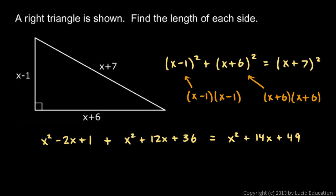Now we need to simplify this. So let's just look at the left side for a second. We have x squared and x squared. That's 2x squared. And I have a minus 2x and a plus 12x. That works out to plus 10x. And I have this plus 1 and the plus 36. That gives me a plus 37. I'll leave the right-hand side unchanged for just a moment.